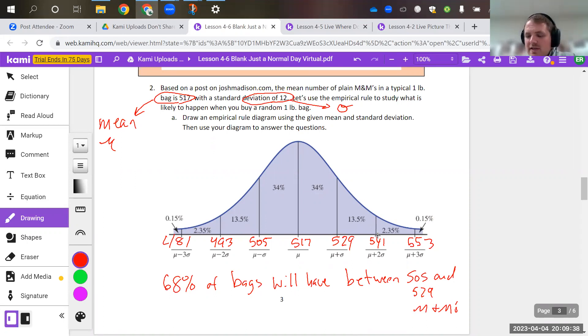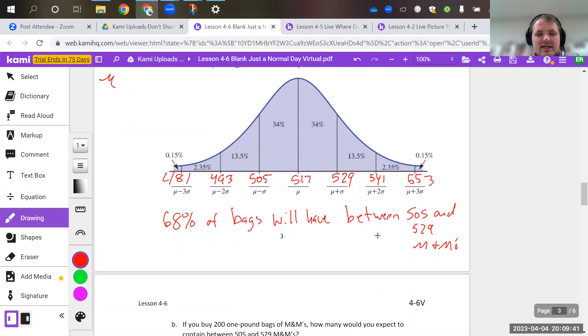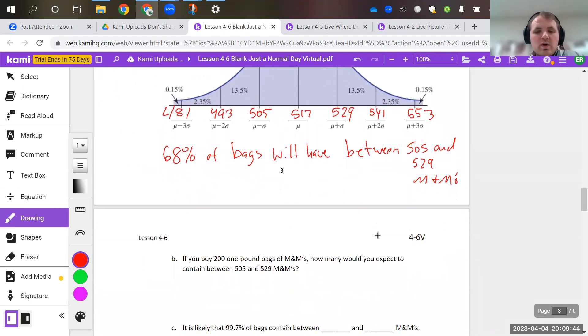So I think there's a couple of specific questions. So it says, as you're looking at the scenarios down here, if you buy 200 one pound bags of M&Ms, how many would you expect to contain between 505 and 529? So again, that's that first standard deviation. So we want 68%, we're pretty confident that 68% of them will fall into that category. So we would just do 68% of 200, which I would just multiply 0.68 times 200 to get 136 bags. Which if you think about it is, that leaves you with 64 bags that would be outside that first standard deviation, which is pretty big, in my opinion.